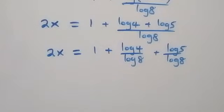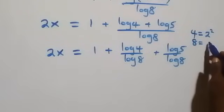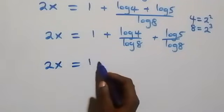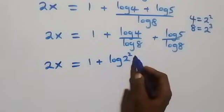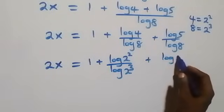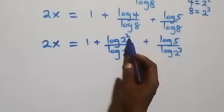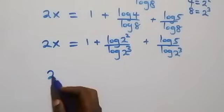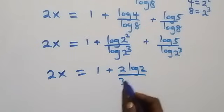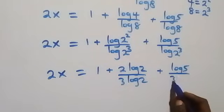That is, from here we can also express 4 as 2 times 2, which is 2 squared, and 8 as 2 times 2 times 2, which is 2 raised to power 3. At this point, this becomes 2x equals to 1 plus log 2 squared over log 2 cubed, then plus log 5 over log 2 cubed. From here we also apply the power rule: 2 log 2 and 3 log 2 respectively, and we have 2x now equals to 1 plus 2 log 2 over 3 log 2, then plus log 5 over 3 log 2.